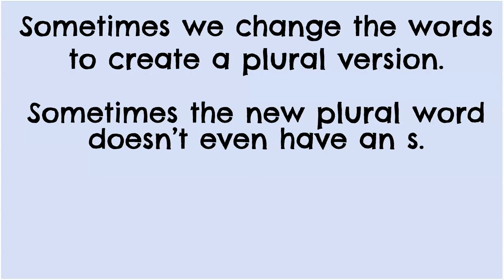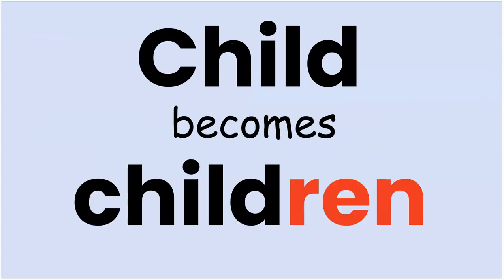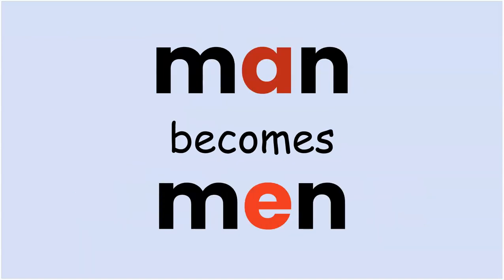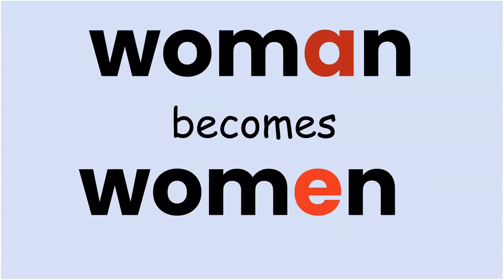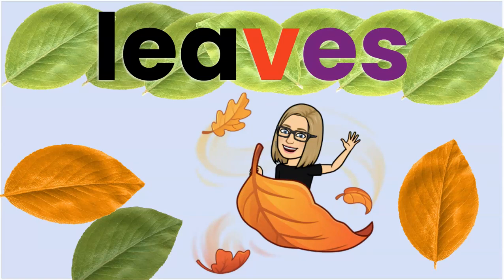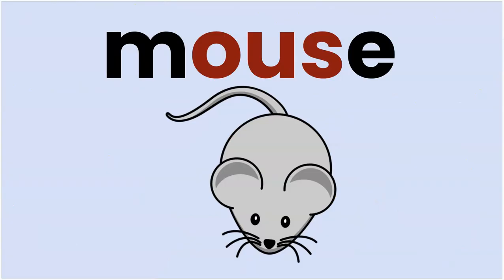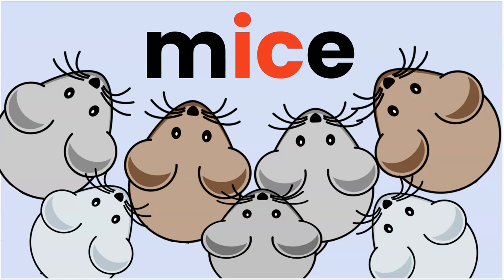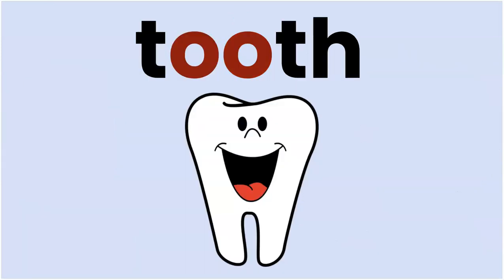Sometimes we change the whole word to create a plural version, and sometimes the new plural word doesn't even have an S. Child becomes children. Man becomes men. Woman becomes women. And leaf becomes leaves. Mouse becomes mice. Tooth becomes teeth.